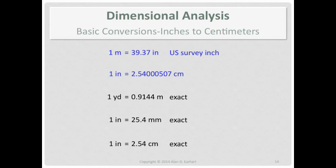So when you're doing the relationships use the exact one - one inch is exactly equal to 2.54 centimeters - unless you're a surveyor. And Wikipedia actually has a decent summary of the history of an inch.